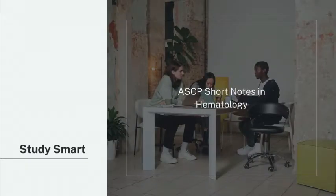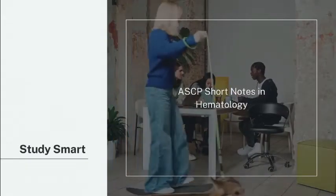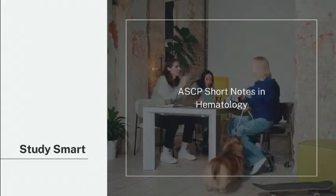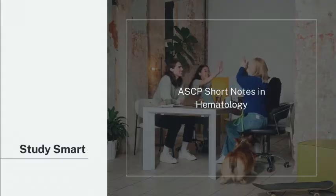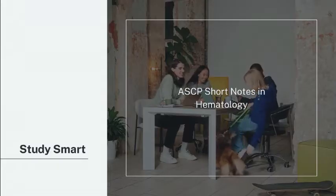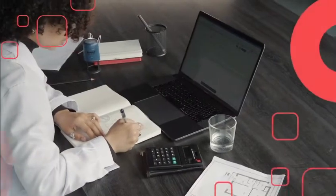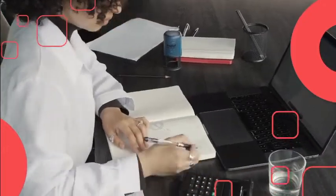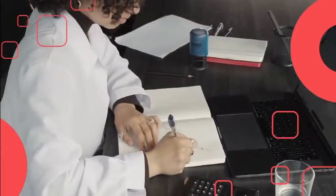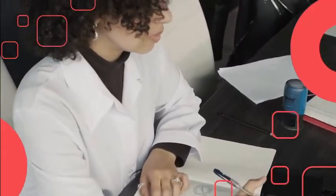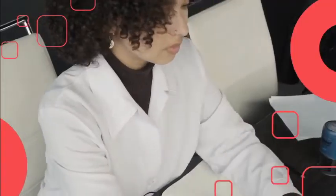Step 2: Study Smart with ASCP Short Notes in Hematology. This comprehensive guide is your go-to resource for concise yet comprehensive study materials. With clear explanations and practical insights, it's the perfect companion to reinforce your understanding of key concepts. Whether you're reviewing blood cell morphology or delving into hemostasis, ASCP Short Notes has got you covered.